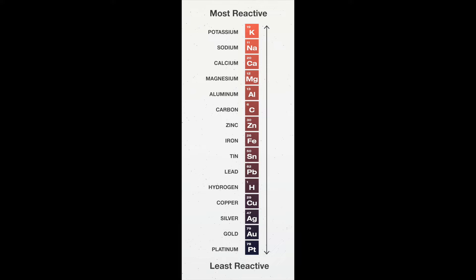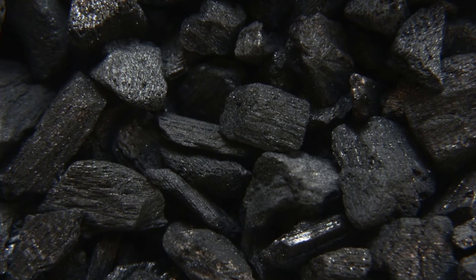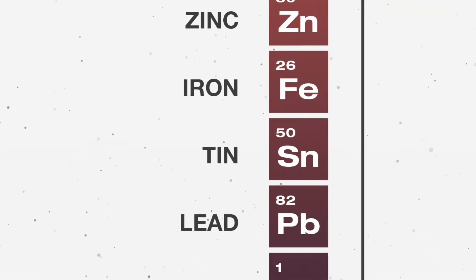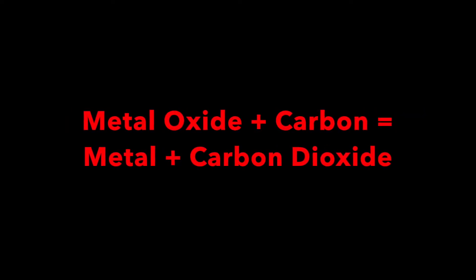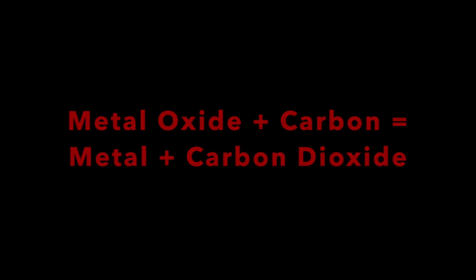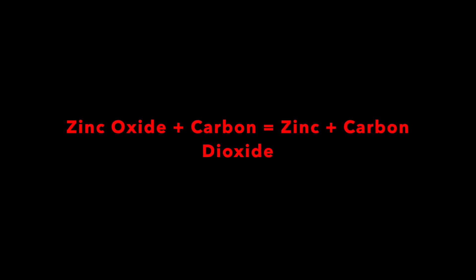A reactive metal will displace a less reactive metal from its compounds. Carbon is the one commonly used in industry, and it will displace metals which are lower down in the reactivity series. To do this, you heat the metal oxide with carbon to form carbon dioxide and the metal. For example, zinc is commonly found as zinc oxide, so to displace the zinc from the oxygen: zinc oxide + carbon → zinc + carbon dioxide.